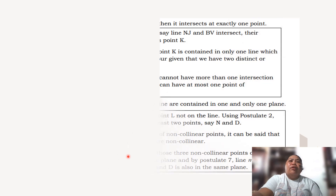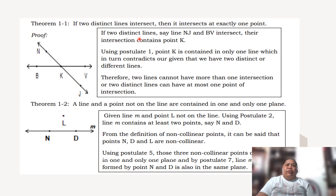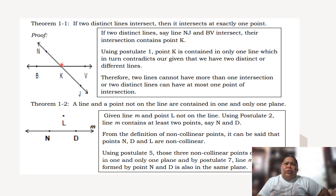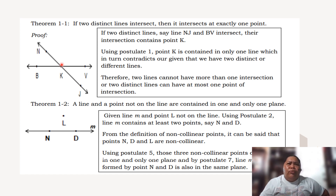Now for a theorem: if two distinct lines intersect, then they intersect at exactly one point. For the proof, given lines NJ and VV that intersect at point E — using Postulate 1, any point is contained in only one line, which contradicts the assumption of two distinct lines sharing more than one point. Therefore, two distinct lines can have at most one point of intersection.